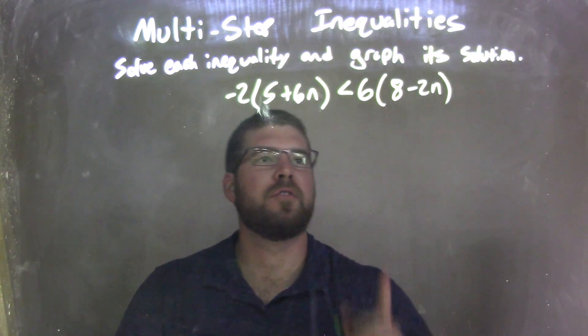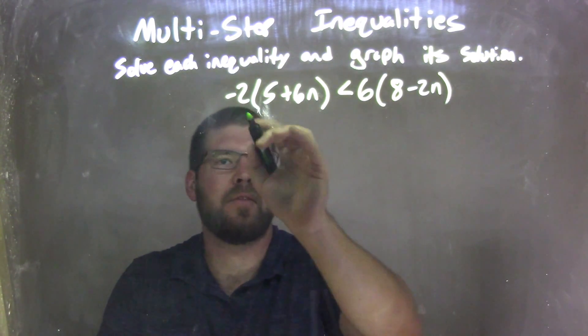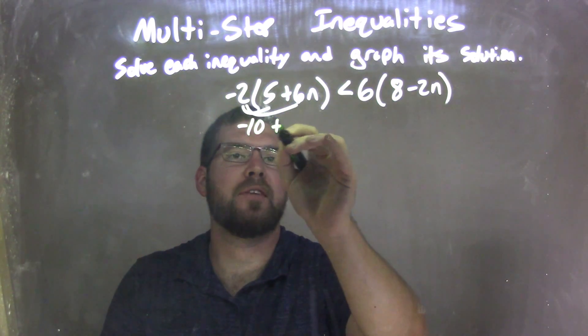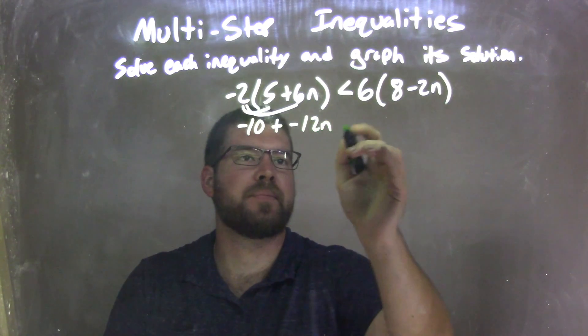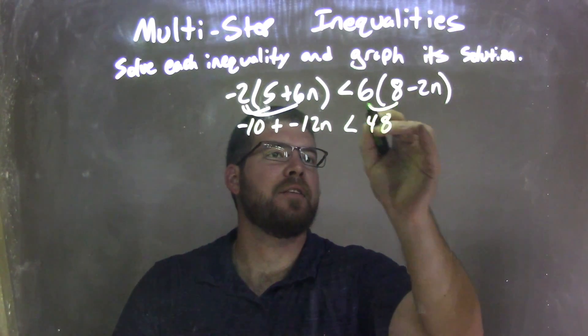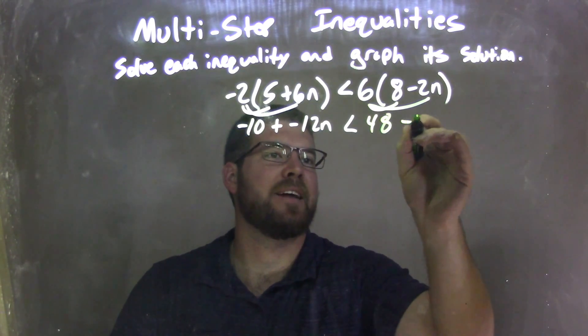Well, first thing I want to do is distribute for both parentheses there. So negative 2 times 5 is negative 10, and negative 2 times 6n is negative 12n. That's less than 6 times 8, which is 48, and 6 times negative 2n is negative 12n.